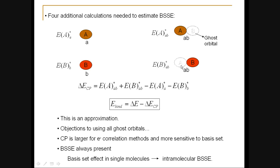Now, you can see where this is going. If we take the difference between the sum of the energies here and the sum of the energies here, we should get an estimate of how important it is to have the basis set of the other molecule here when we calculate the energy of A.